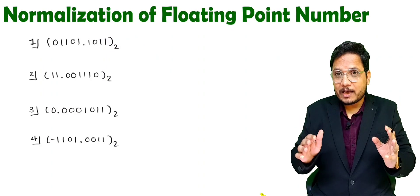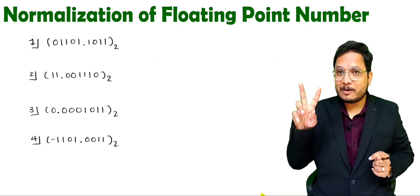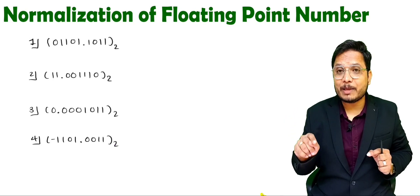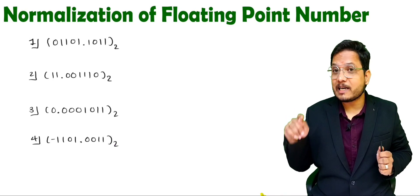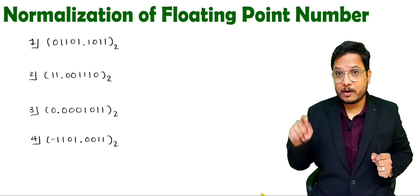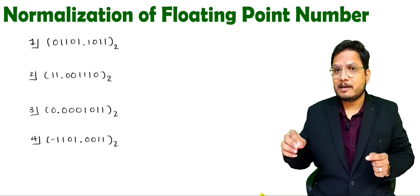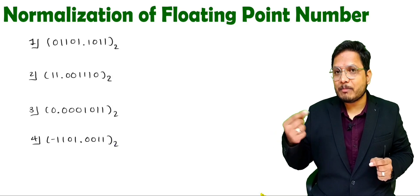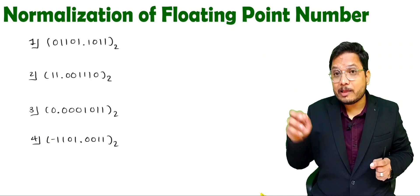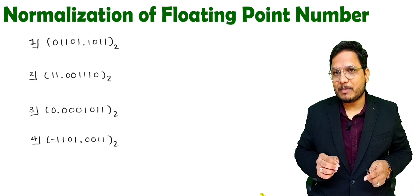In a computer, when we store numbers as per floating point numbers, there are two standards that we usually use. One is IEEE 754 single precision standard and the second is IEEE 754 double precision standard. Now both of these standards are there as per floating point number representation.